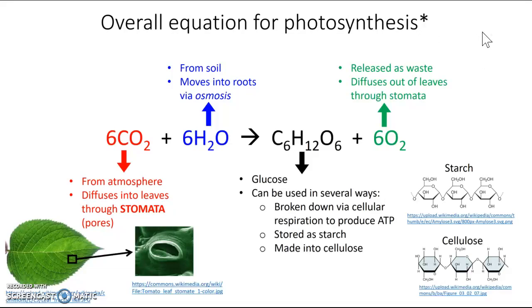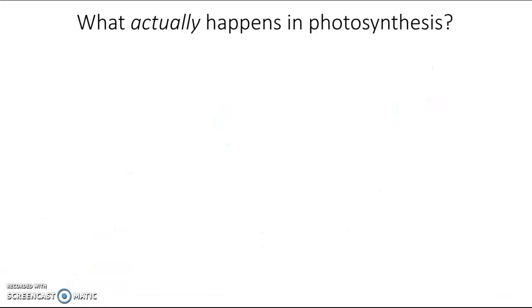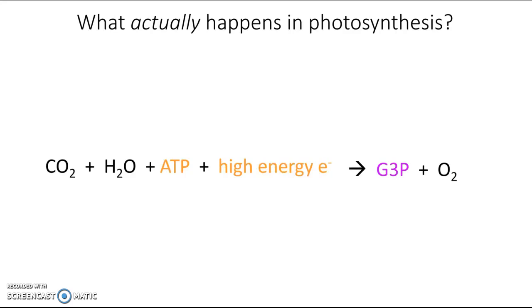There's an asterisk on the equation because it's not entirely accurate — it's a little more complicated in real life. It takes a lot of energy to build those new bonds. Plants are using CO₂ and water, but they also need ATP and high-energy electrons to build the products. The actual product of photosynthesis is not technically glucose but rather a molecule called G3P, a three-carbon sugar and precursor to glucose. Plants then put together molecules of G3P to build glucose after photosynthesis.